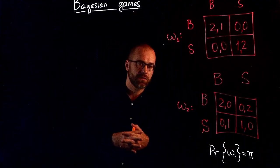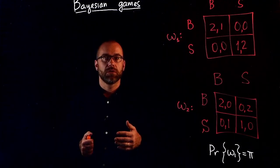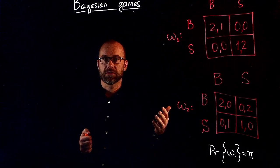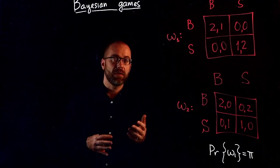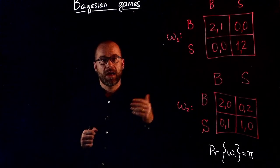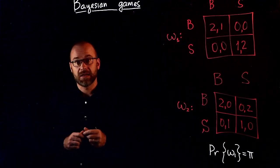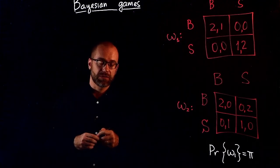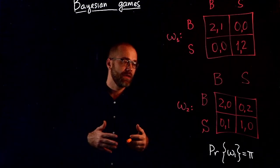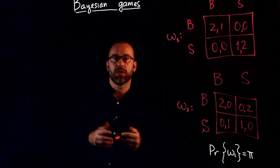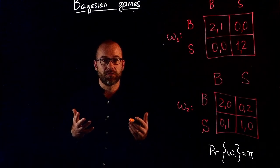One example of such an application would be auctions. When you participate in an auction, you don't really know what the preferences of other people who are participating in the auction are. Namely, you don't know how much these opponents value the object that is for sale. So to analyze situations like auctions, we need to introduce a new component into the game, and that component is asymmetric information.